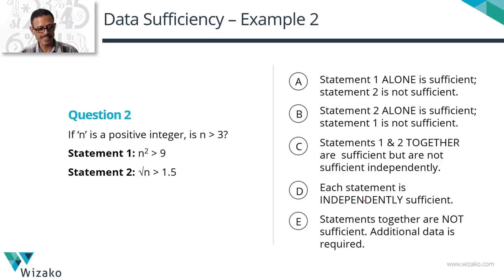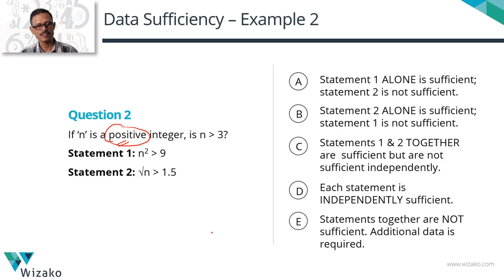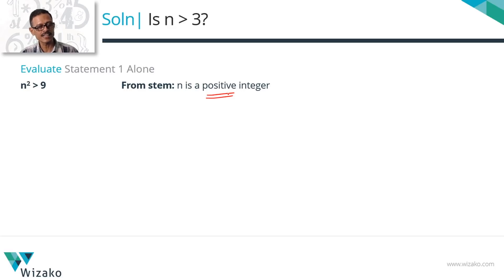Moving to question 2. If n is a positive integer, is n greater than 3? Don't forget this key information from the question stem — it can make a big difference to the answer. Statement 1 says n² > 9. Write this down on your scratch paper. The solution to n² > 9 has two possibilities.